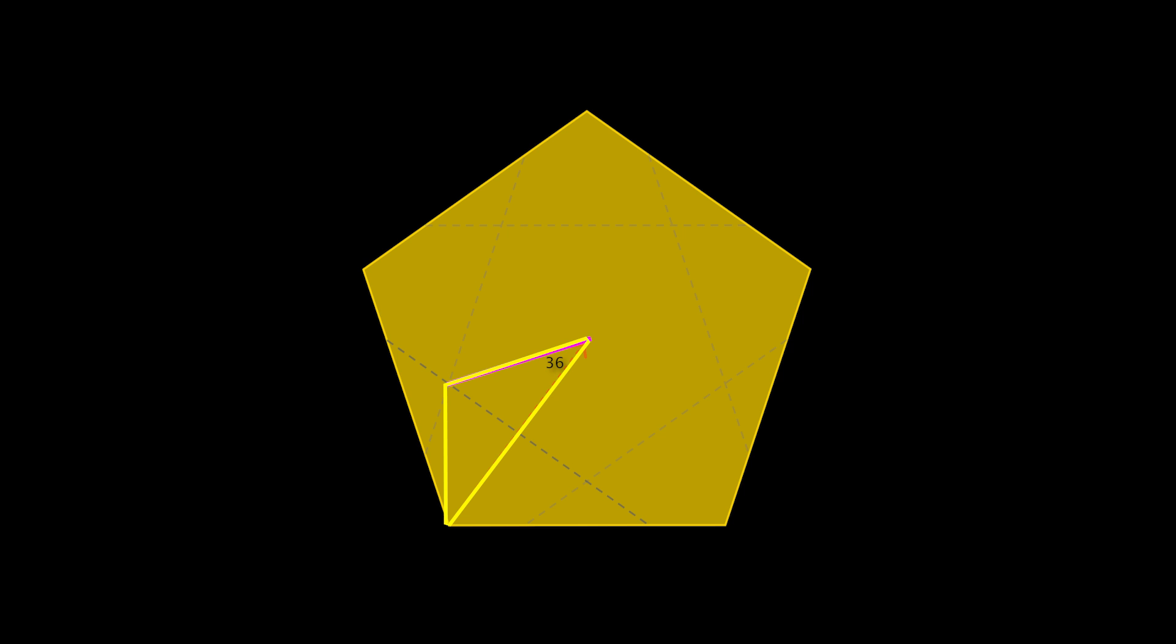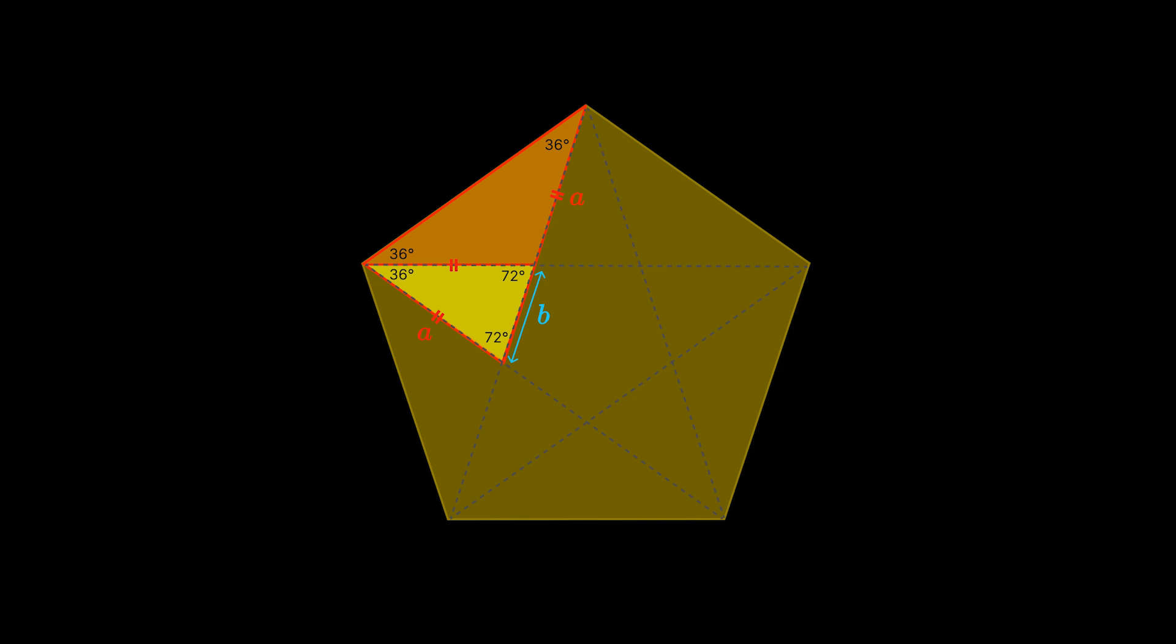Now this triangle is actually part of the golden triangle. It becomes more obvious if we construct another golden triangle down the bottom here with angles 72, 72 and 36, and then we'll form the golden triangle which we saw before.